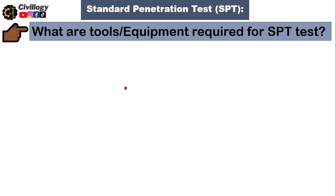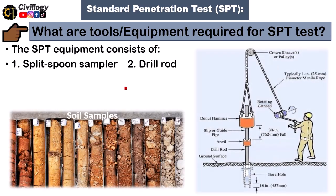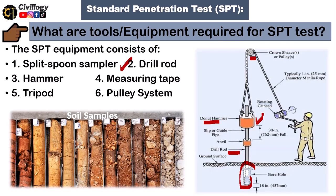Now, what are the tools and equipment required for the SPT test? The equipment consists of a split spoon sampler, through which you get a sample of the soil, as shown in the pictures. There is also a drill rod, a donut hammer, and a measuring tape. Additionally, a tripod and pulley system are used for the convenience of lifting the heavy hammer. The weight of the hammer will be discussed in the next slide.